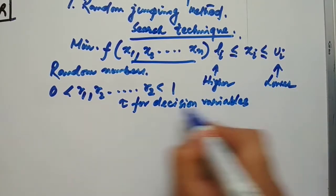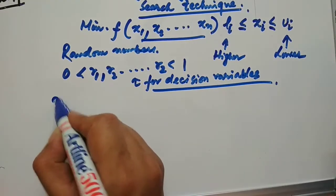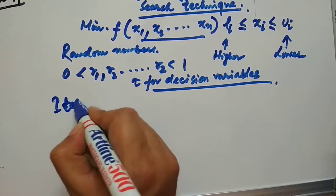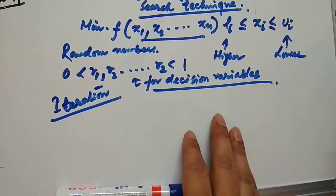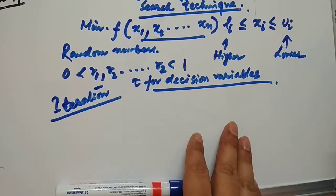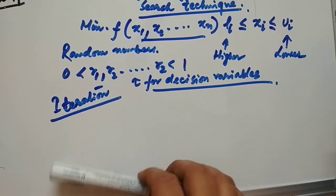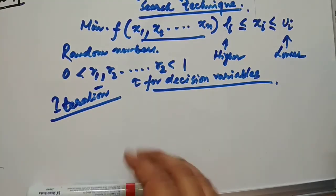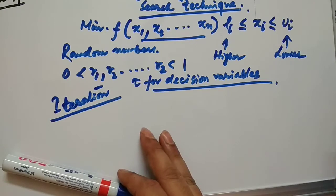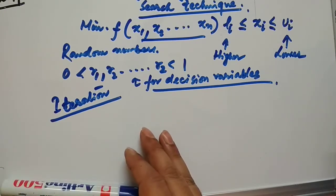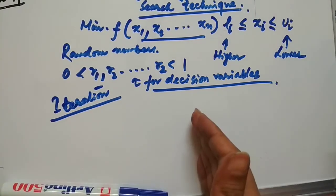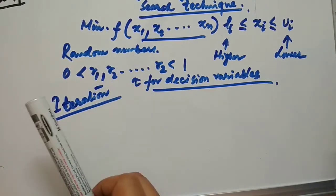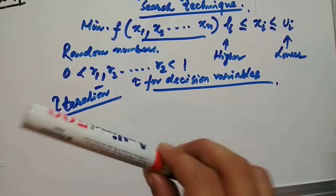We have to search for random numbers and then perform iterations. In linear programming we get two or three iterations and reach the optimal point, but in nonlinear programming we have to iterate at least three to four steps minimum because we are generating random numbers repeatedly. It is a lengthy process.